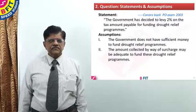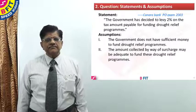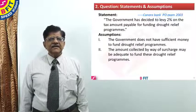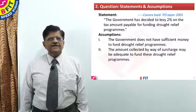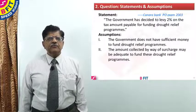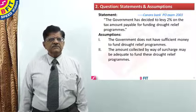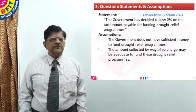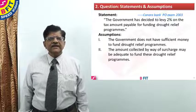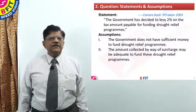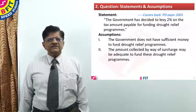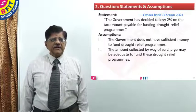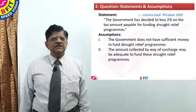Question number two, taken from Kanara Bank PO exam 2003. The statement says: the government has decided to levy 2% on the tax amount payable for funding drought relief programs. There is no rain, people are suffering, and agriculturists need relief. Assumption one: the government does not have sufficient money to fund the drought relief program. Assumption two: the amount collected by way of surcharge may be adequate to fund these drought relief programs.